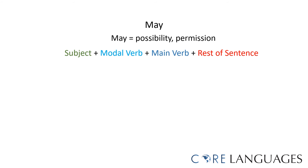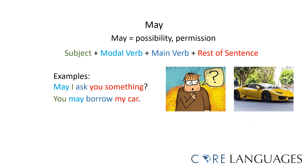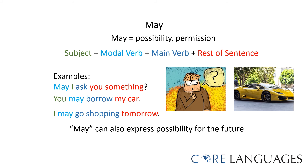We use the modal verb 'may' to express a possibility, but also to give someone permission. For example, may I ask you something? — here we ask for permission to ask something. You may borrow my car — here we give someone permission to borrow the car. 'May' can also be used to express possibility for the future, for example, I may go shopping tomorrow — it is a possibility that I go shopping tomorrow.